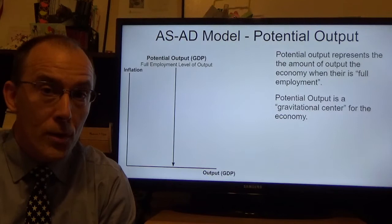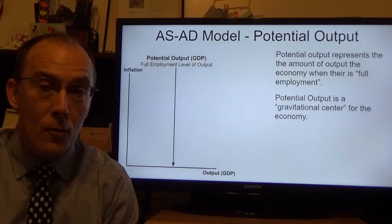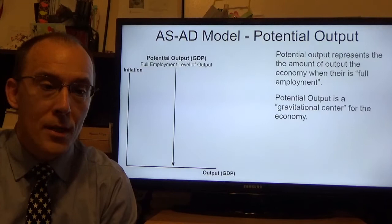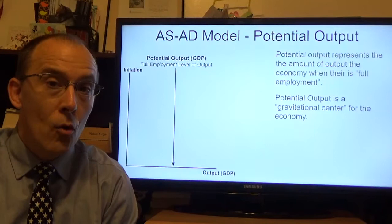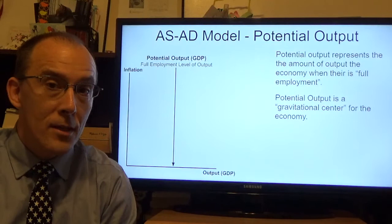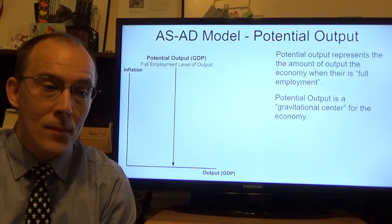A third piece of the model is the level of potential output or potential GDP. This can be thought of as the full employment level of output — if all your resources are being used, this is the total amount you should be expected to produce in the long run. This can also be thought of as the gravitational center of the economy. When the economy gets knocked off balance, such as during a recession, the tendency is to recover back to this point where it's utilizing all of its resources.